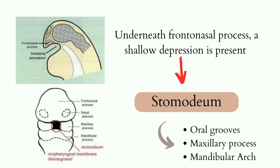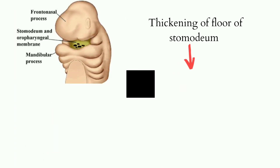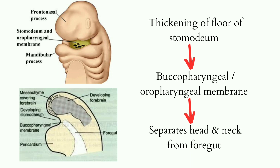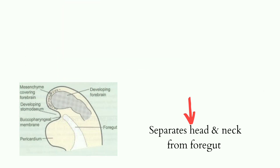The Stomodium consists of pharyngeal arches, nasal process, and mandibular arch. The floor of the Stomodium gets thickened, giving rise to the buccopharyngeal or oropharyngeal membrane, which separates the head and neck from the foregut.